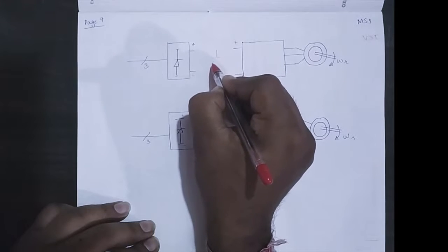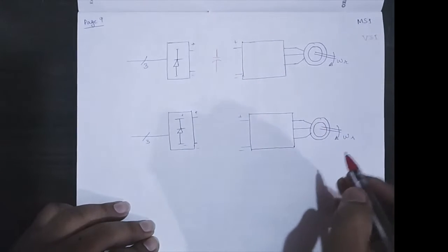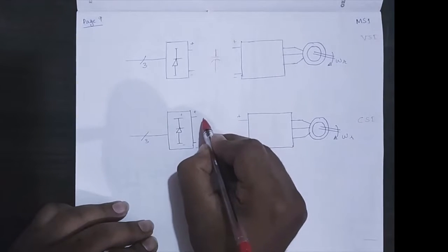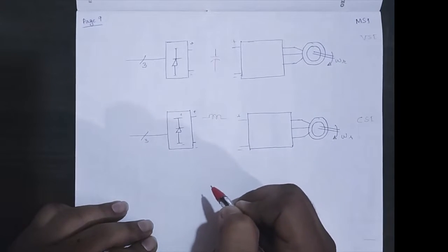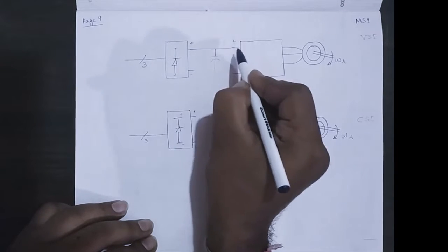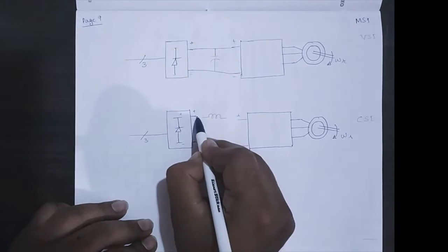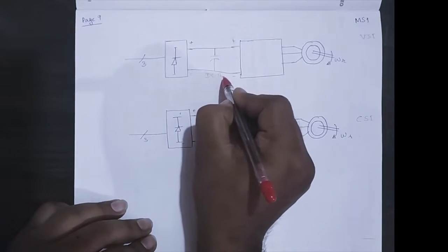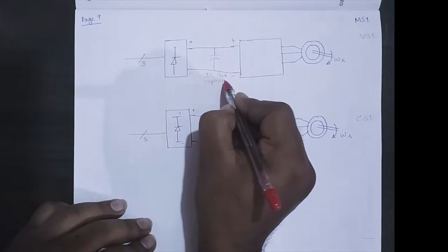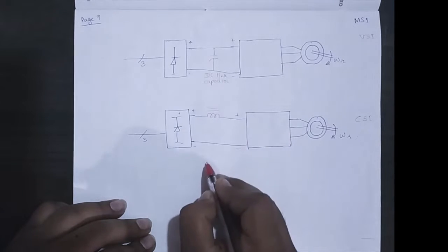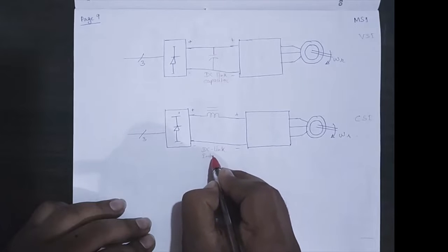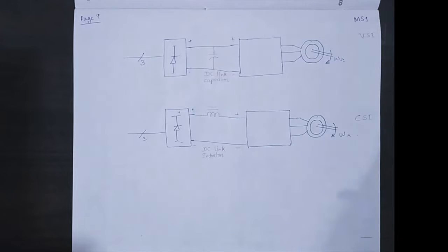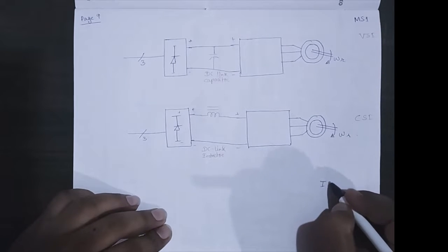Now the top one we will be seeing as VSI. In the middle, if it is VSI, a capacitor will be placed. In case of CSI, the DC link will be an inductor. VSI uses DC link capacitor and CSI uses DC link inductor.